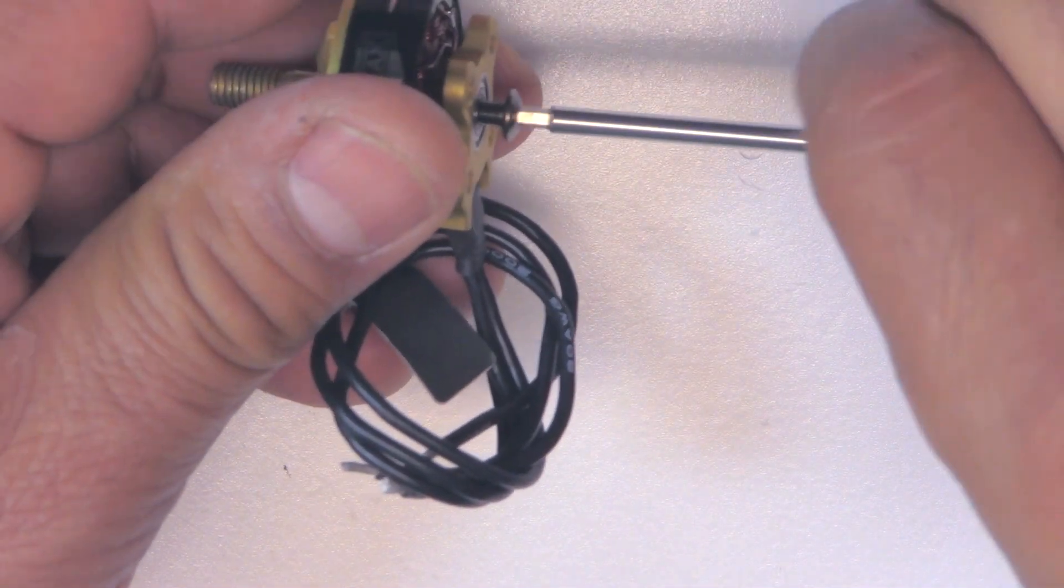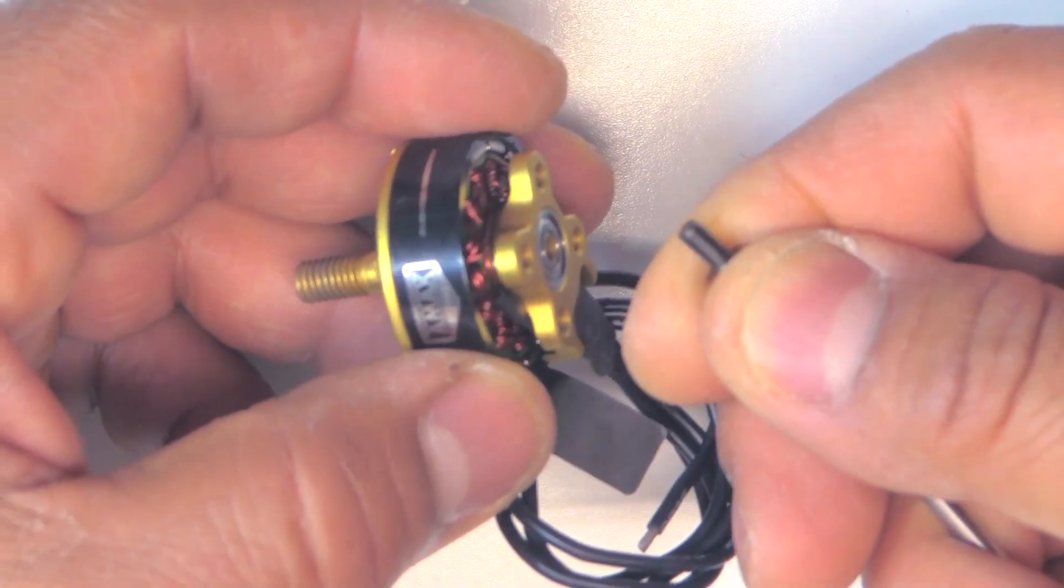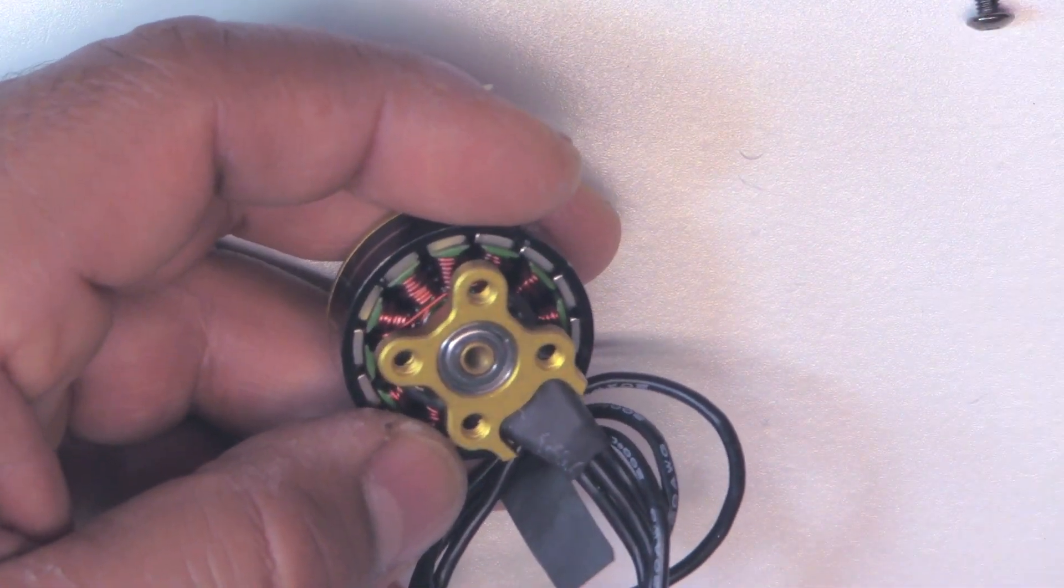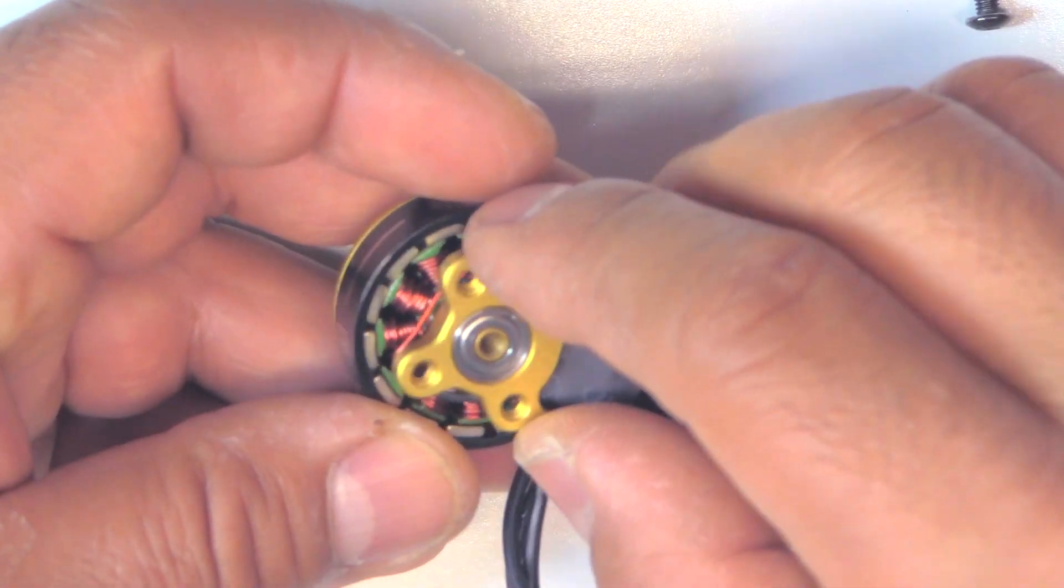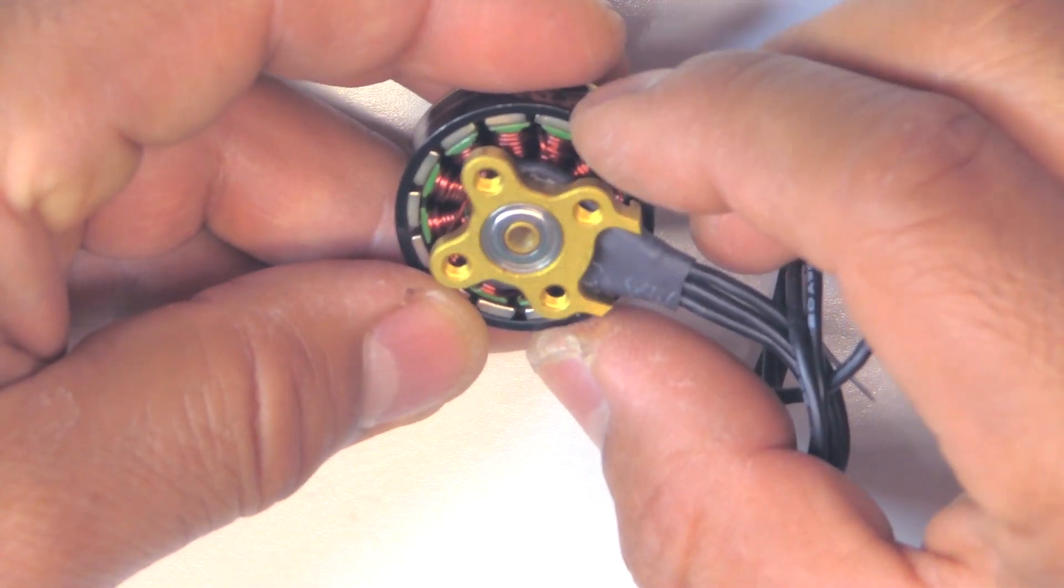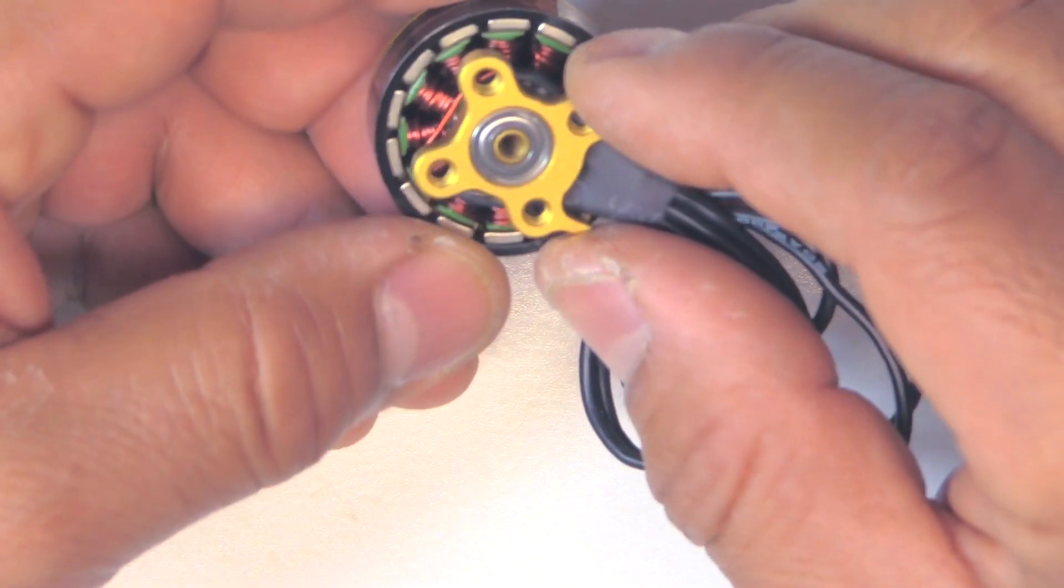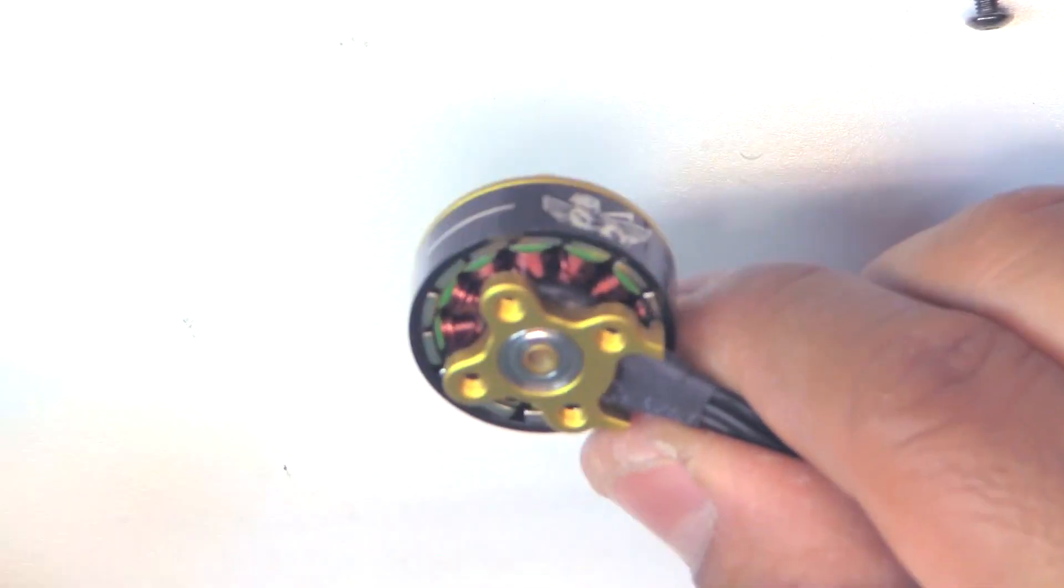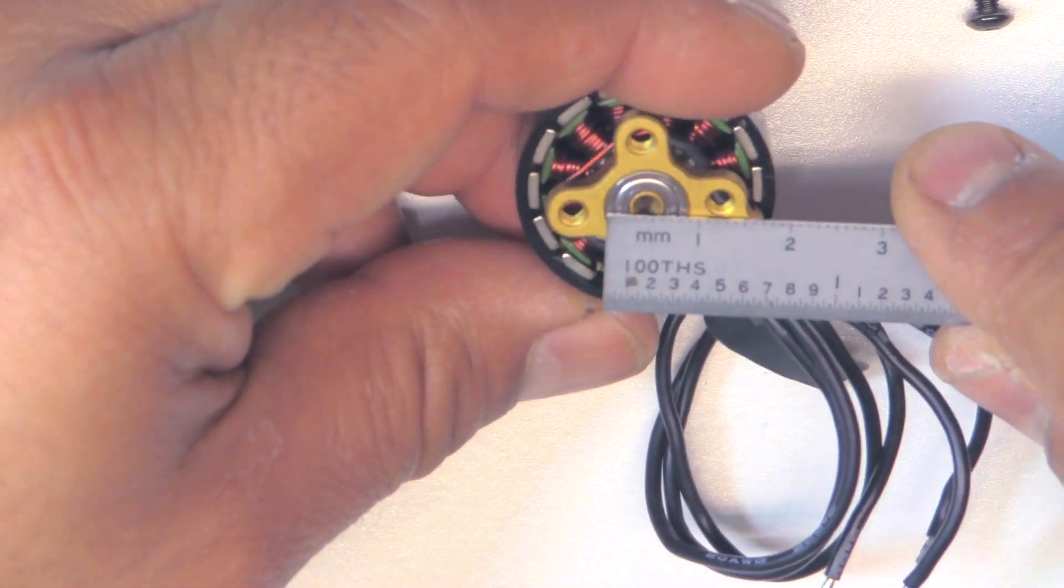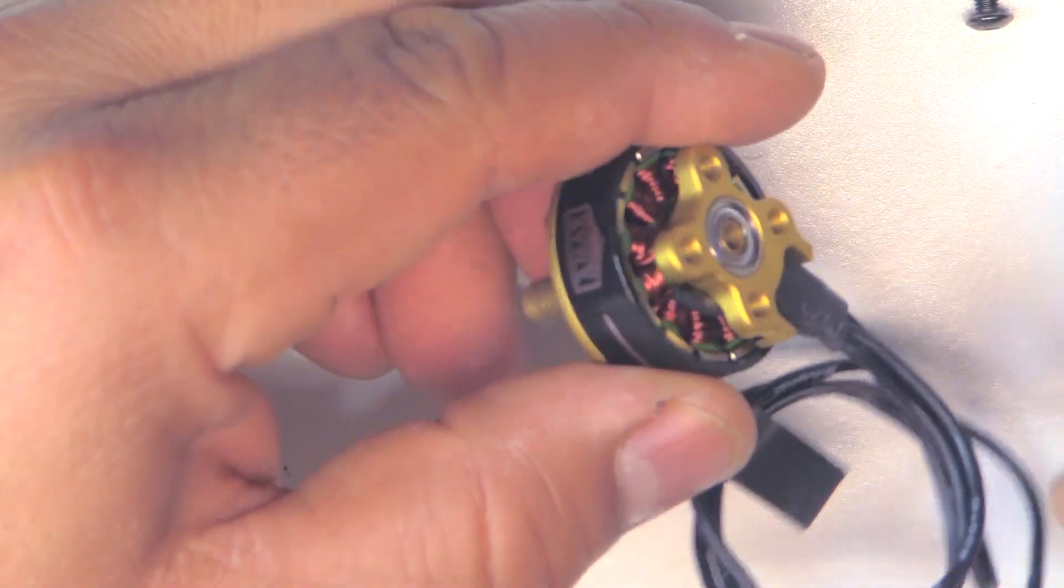The screw comes out pretty easily. Doesn't seem they're using any thread lock, so not a bad idea to put a little thread lock there so you don't lose the screw or to avoid the bell from flying out. On the website they mention these are N52 magnets and the motor is made of 7075 aluminum. These are 4x9x4 bearings, good size.